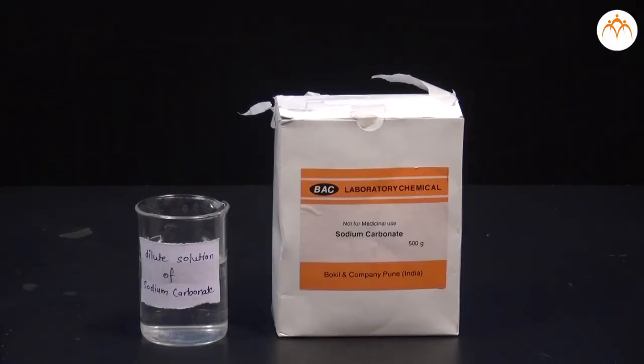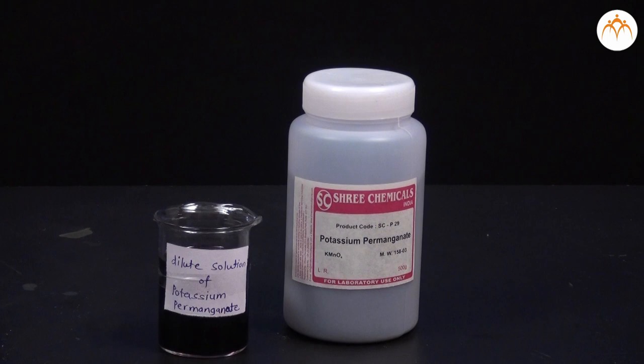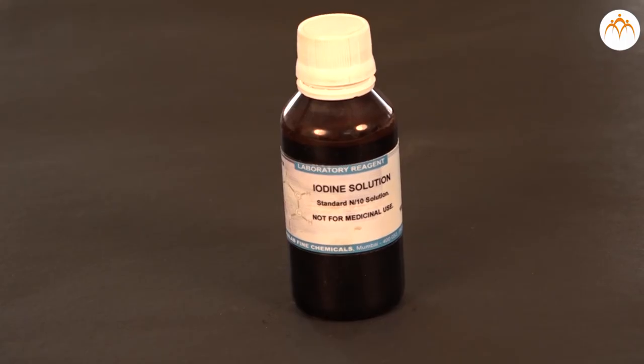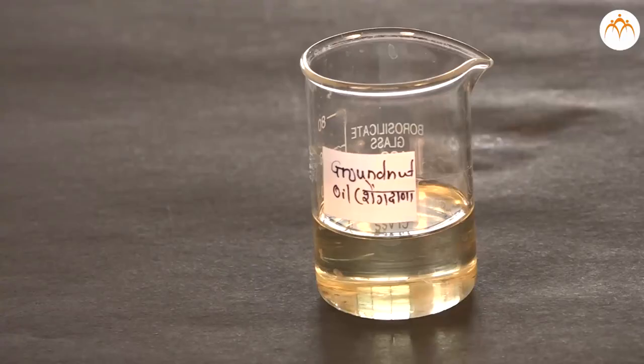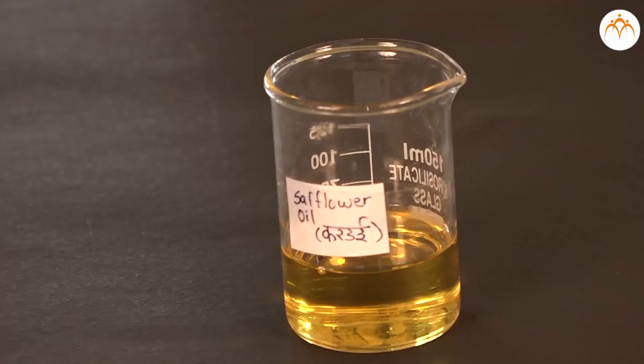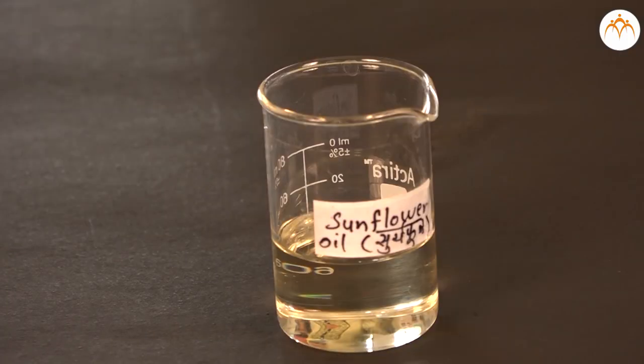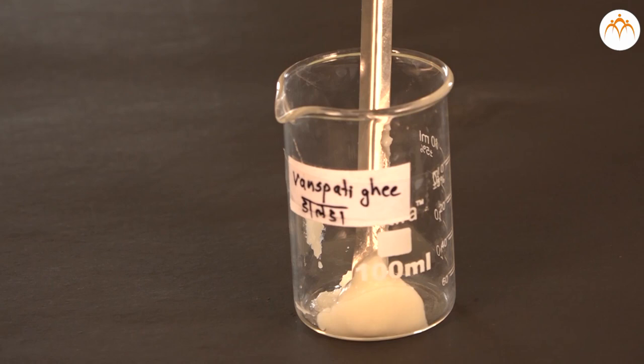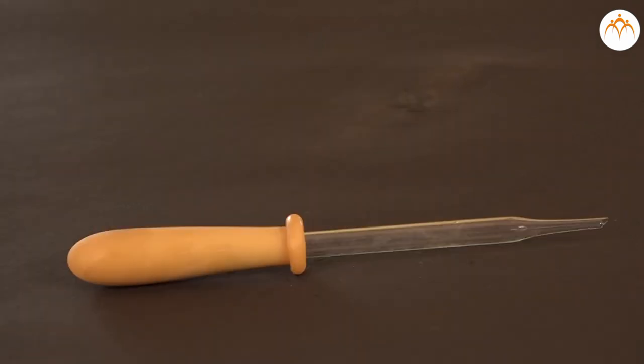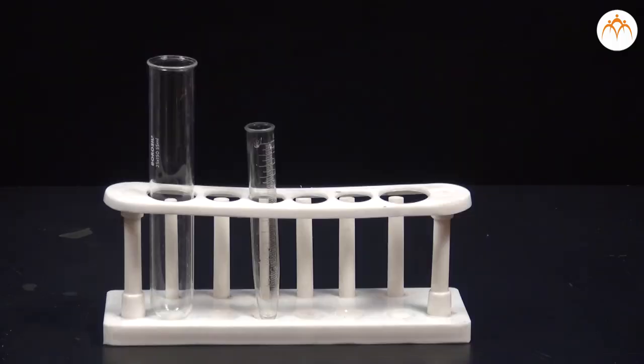Let us study oxidation and addition reactions of carbon compounds, that is fatty acids. We require ethanol, dilute sodium carbonate and dilute potassium permanganate, tincture iodine, groundnut oil, safflower oil, sunflower oil, vanaspati ghee, dropper, burner or spirit lamp, and test tubes.